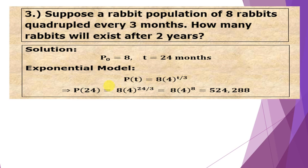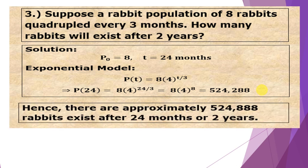So P(24), why 24? We have two years, converted to months, so two years equals 24 months. So we have eight times 4^(24/3) = 4⁸ × 8 = 524,288 rabbits after two years or 24 months.